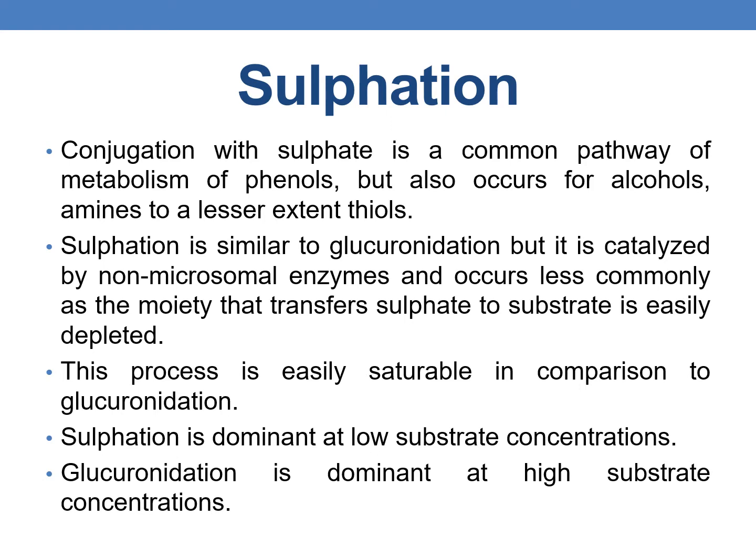Sulfation is similar to glucuronidation but it is catalyzed by non-microsomal enzymes and occurs less commonly, as the moiety that transfers the sulfate to the substrate is easily depleted and the process is easily saturable in comparison to glucuronidation. One more difference is that sulfation is dominant at low substrate concentrations and glucuronidation is dominant at high substrate concentrations.